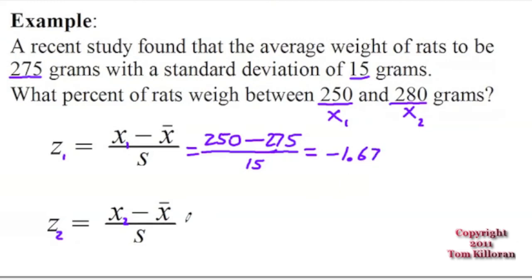Let's do it again down here for z2 using x2. x2 is the 280 grams. And we're going to subtract away the mean, which is 275, and divide by the standard deviation, which is 15. So 280 minus 275 divided by 15, and this one becomes positive 0.33.